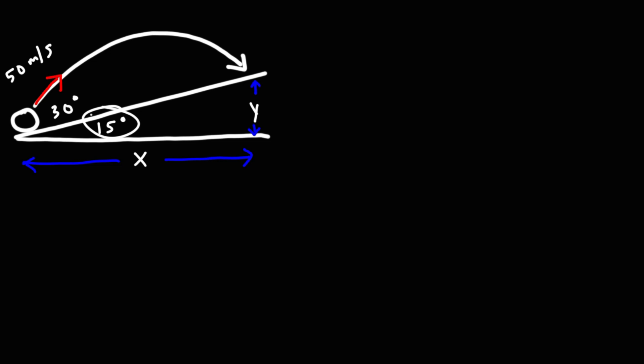Now we're given the angle of the incline, which is 15 degrees. We're given the launch angle relative to the incline, that's 30, but relative to the x-axis, that's 45 degrees. And we know the speed of the projectile, the initial velocity, 50 meters per second, launched at 45 degrees from the horizontal. With this information, how can we determine where along the incline the projectile will land?